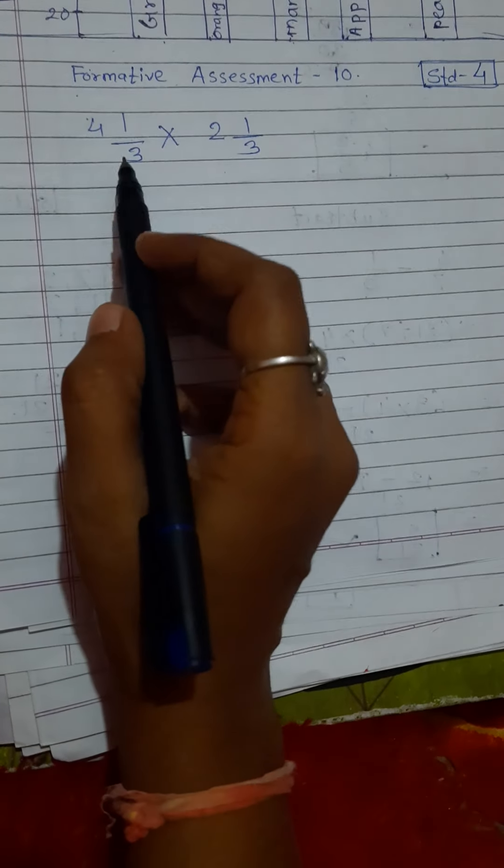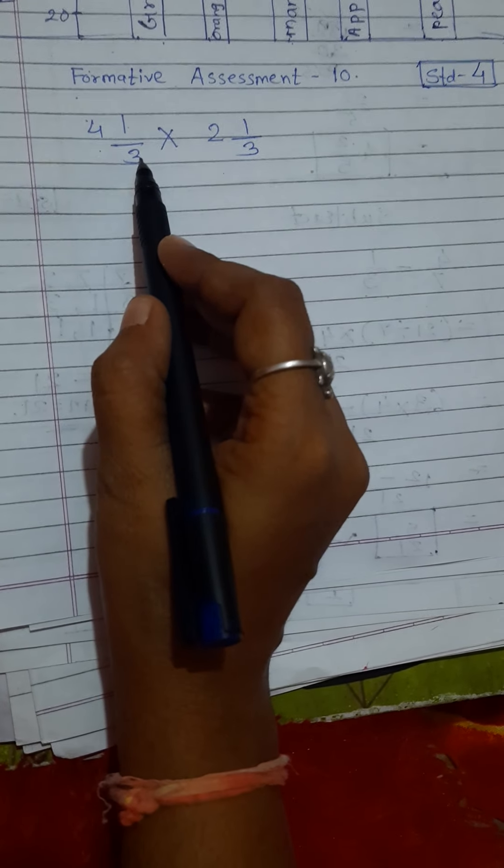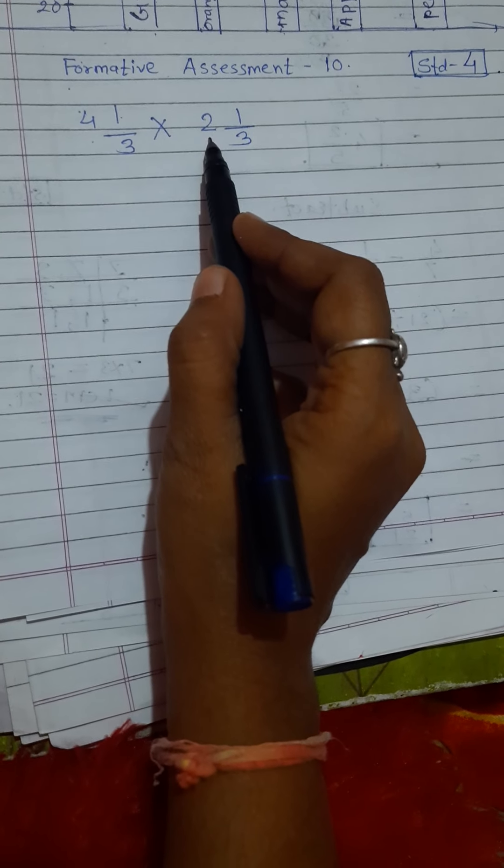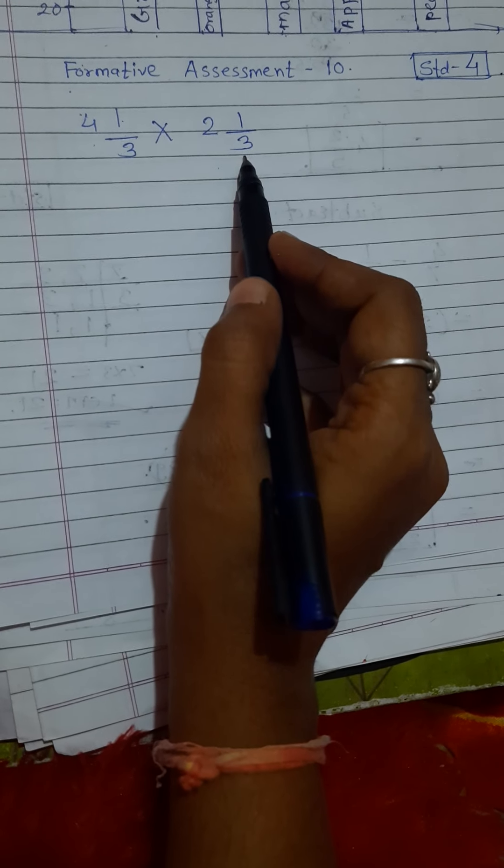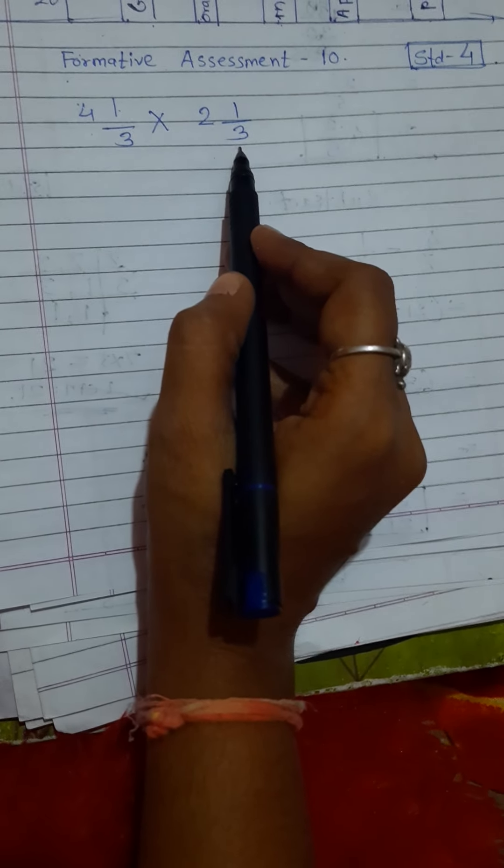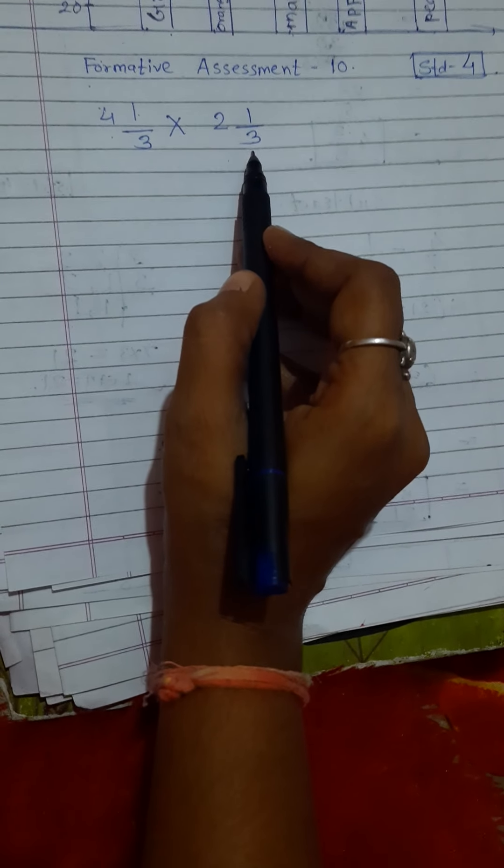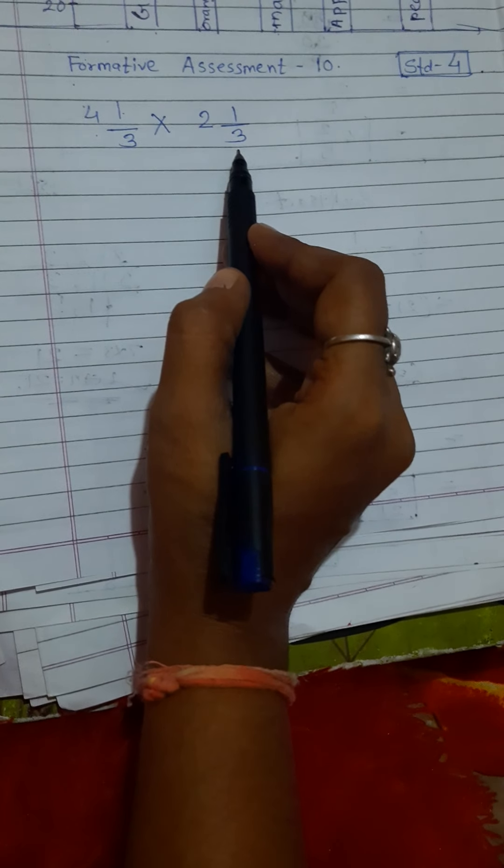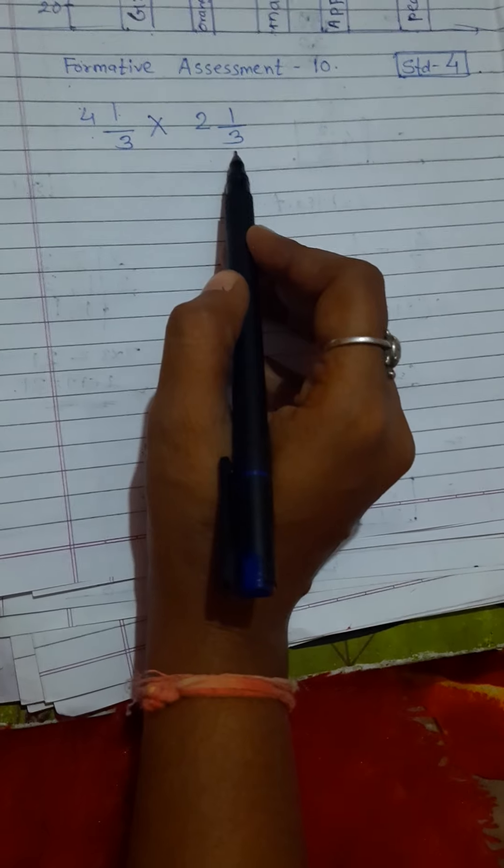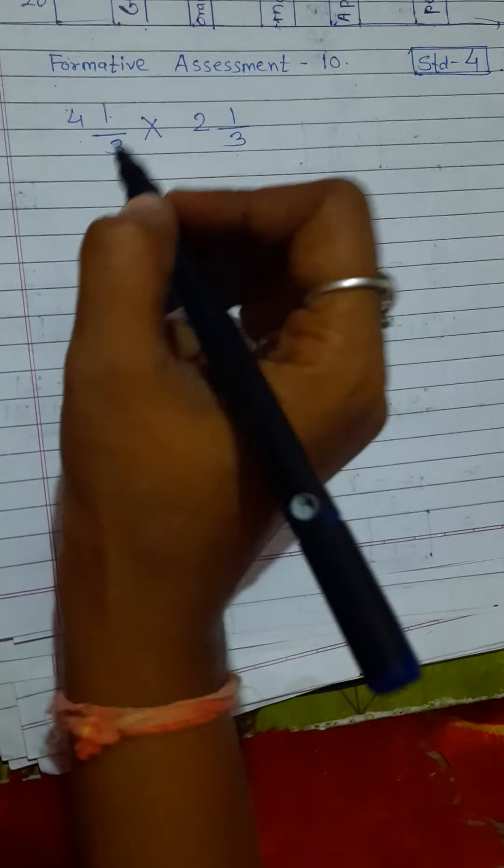But that is the mixed fraction. How we read that? 4 1/3 × 2 1/3. Now we just do their product, means multiplication, and convert into lowest term. It's very simple. Look at here.